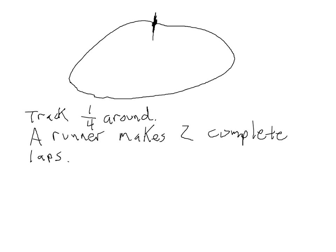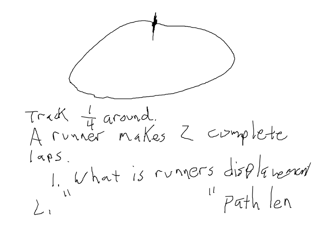And after the runner makes those two complete laps, I'm going to ask you two different questions. One is what is the runner's displacement? And two, what is the runner's path length? What I recommend you do for a moment is pause this recording, think about those two answers. And when you think you've come up with an answer, then unpause the recording and I'll tell you what the solution is.